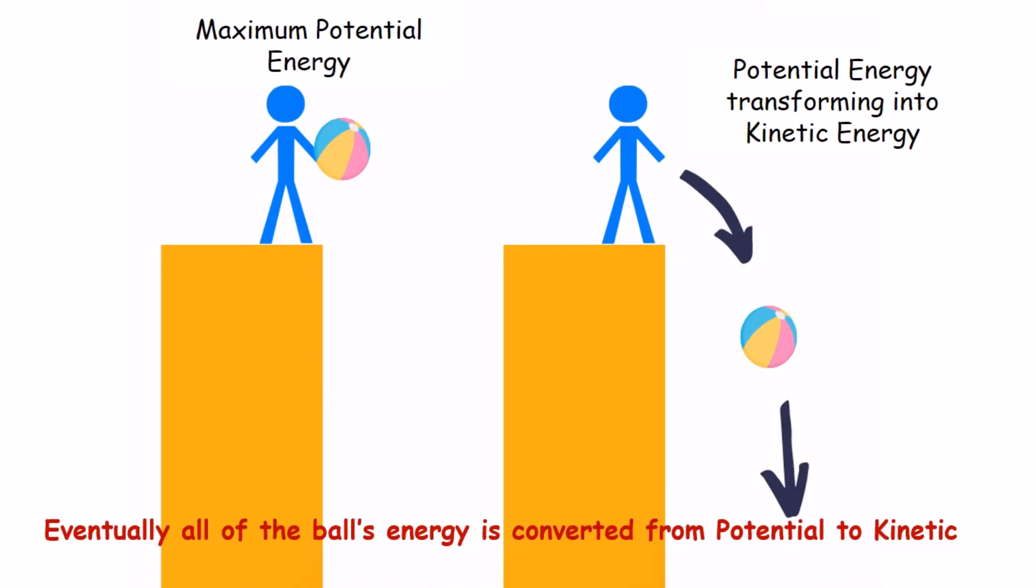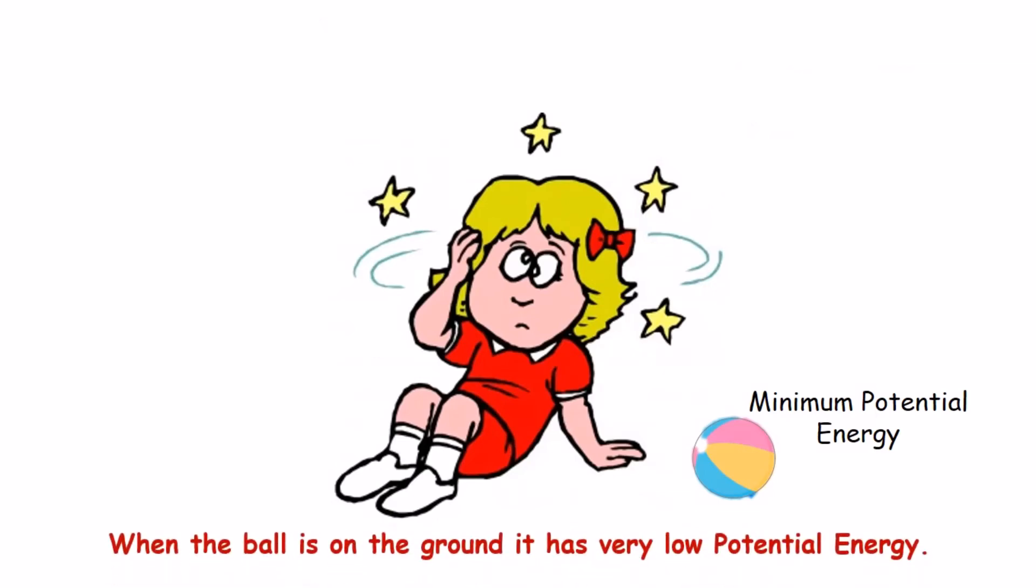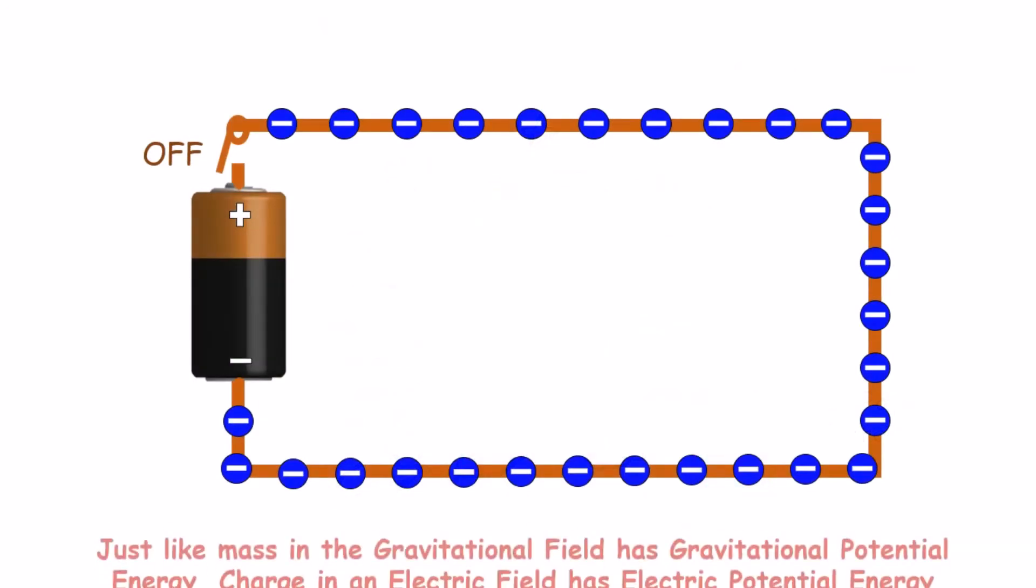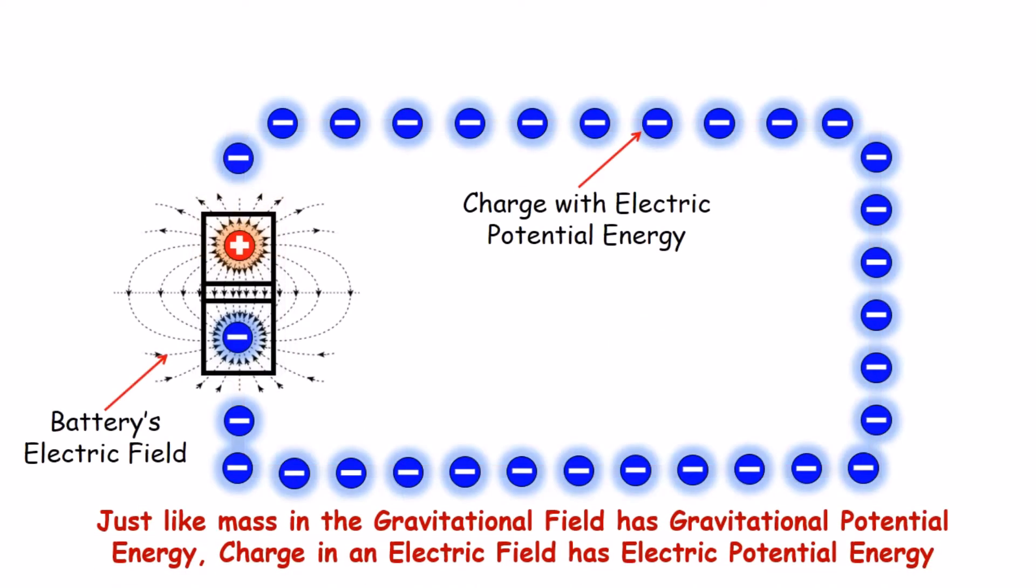Eventually, all the ball's energy is converted from potential to kinetic and then passed on to whatever it hits. When the ball is on the ground, it has very low potential energy. Just like mass in a gravitational field has gravitational potential energy, charges in an electric field have electric potential energy.